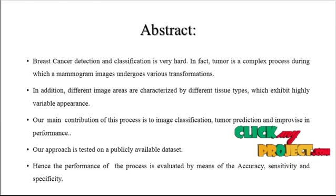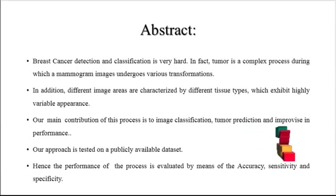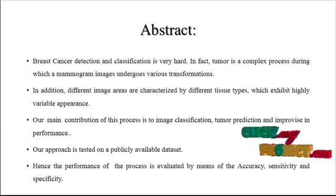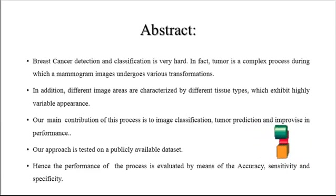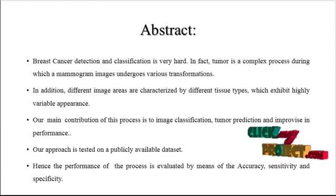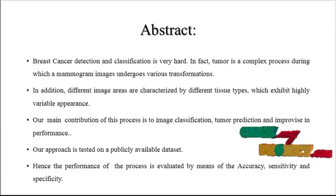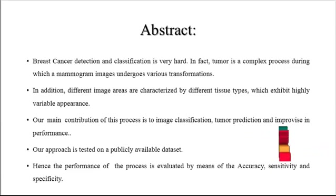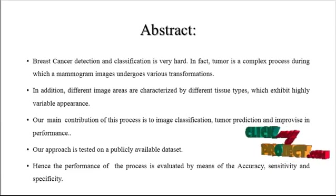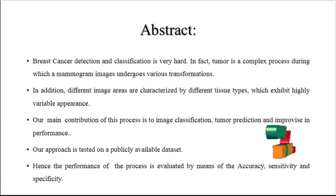Now we are going to discuss about the abstract of the process. Breast Cancer Detection and classification is very hard nowadays. Tumor is a complex process during which a mammogram image undergoes various transformations. Different image areas are characterized by different tissue types which exhibit highly variable appearances. Our main contribution in this process is image classification, tumor prediction, and improved performance.